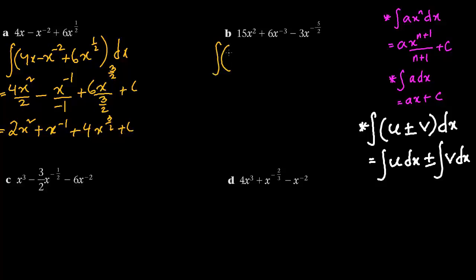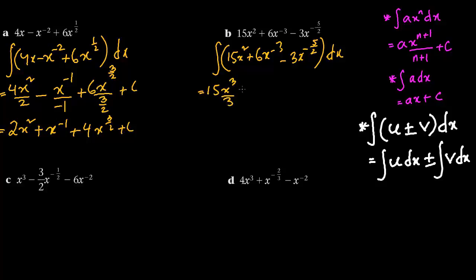Integration of 15x squared plus 6x to the power minus 3 minus 3x to the power minus 5 by 2, dx. So 15 is the constant; x squared becomes x cubed by 3. Plus 6 is the constant; the power minus 3 increases by 1 to give minus 2, divided by minus 2.